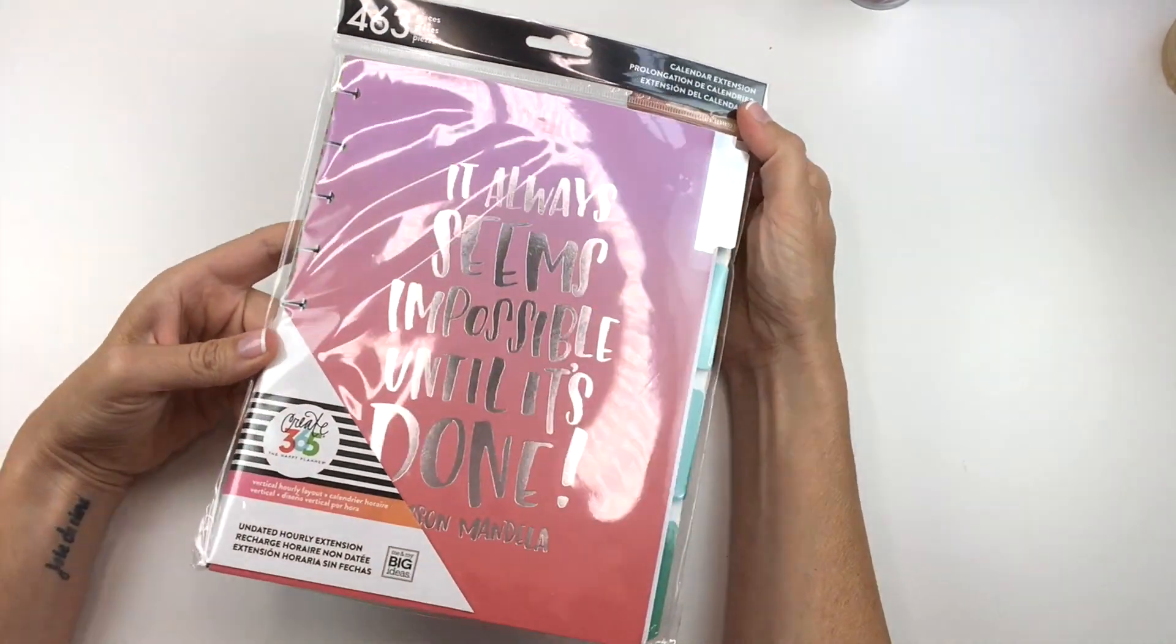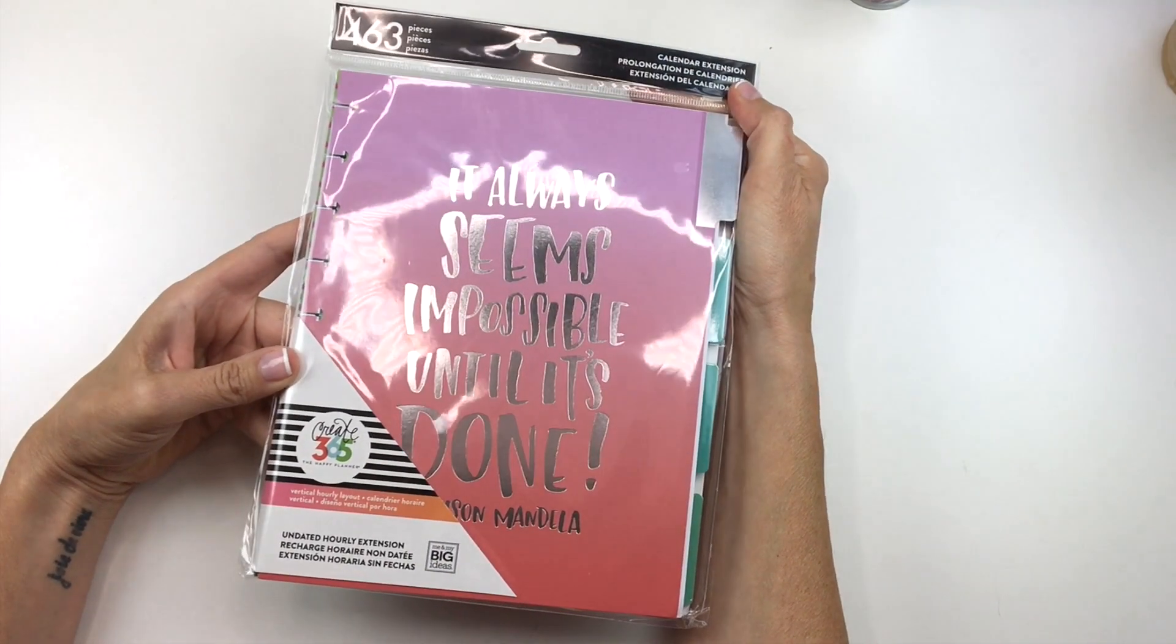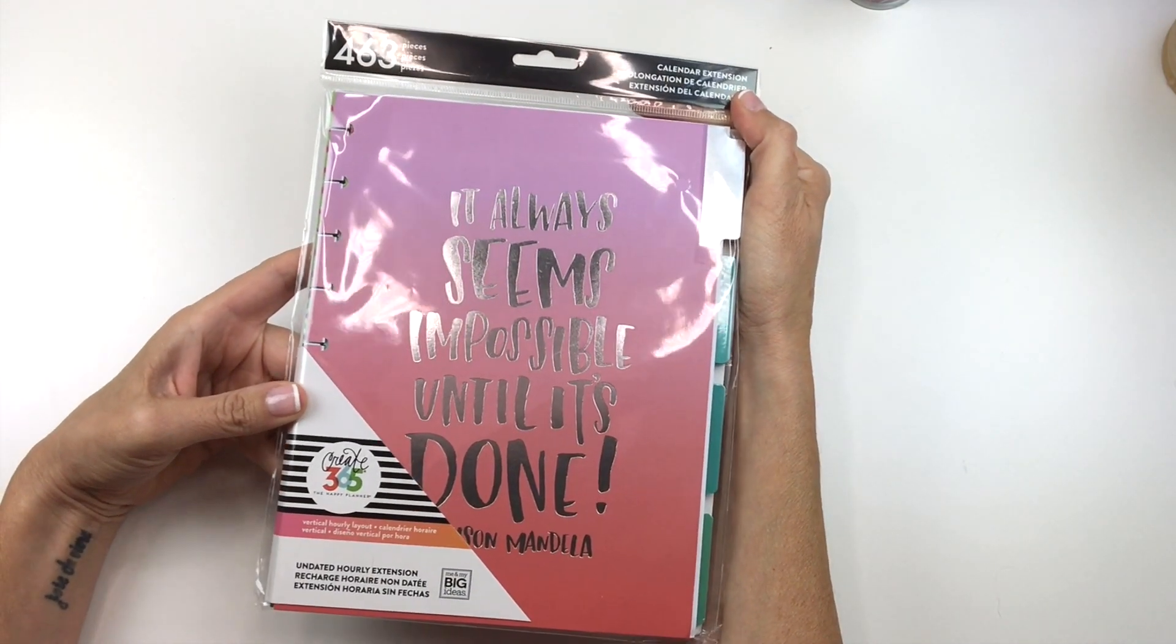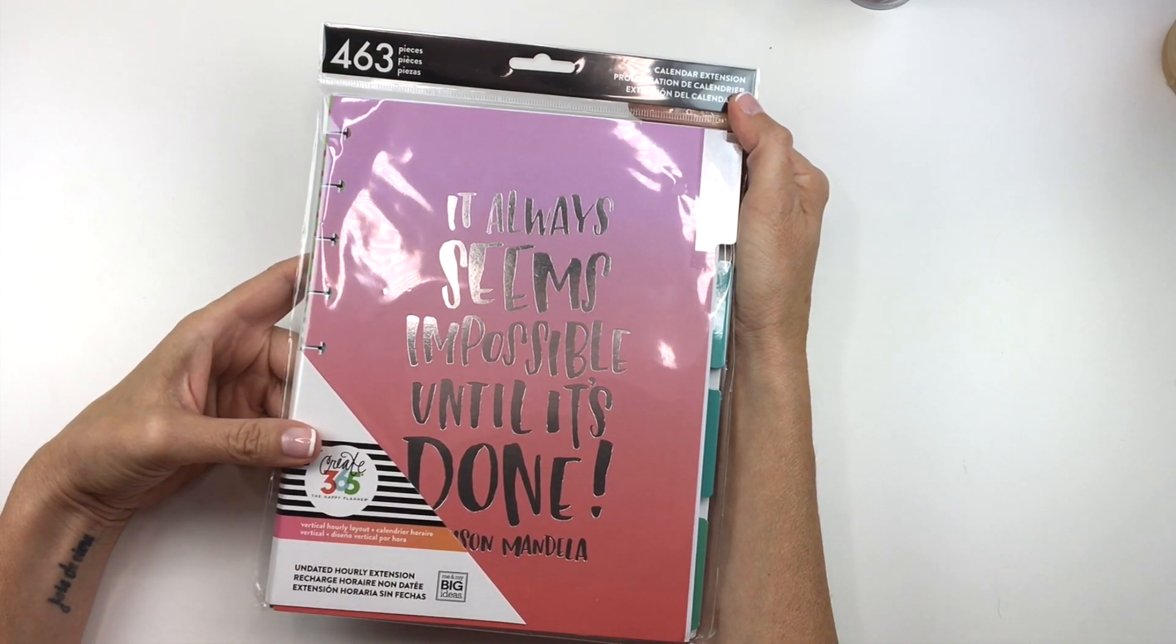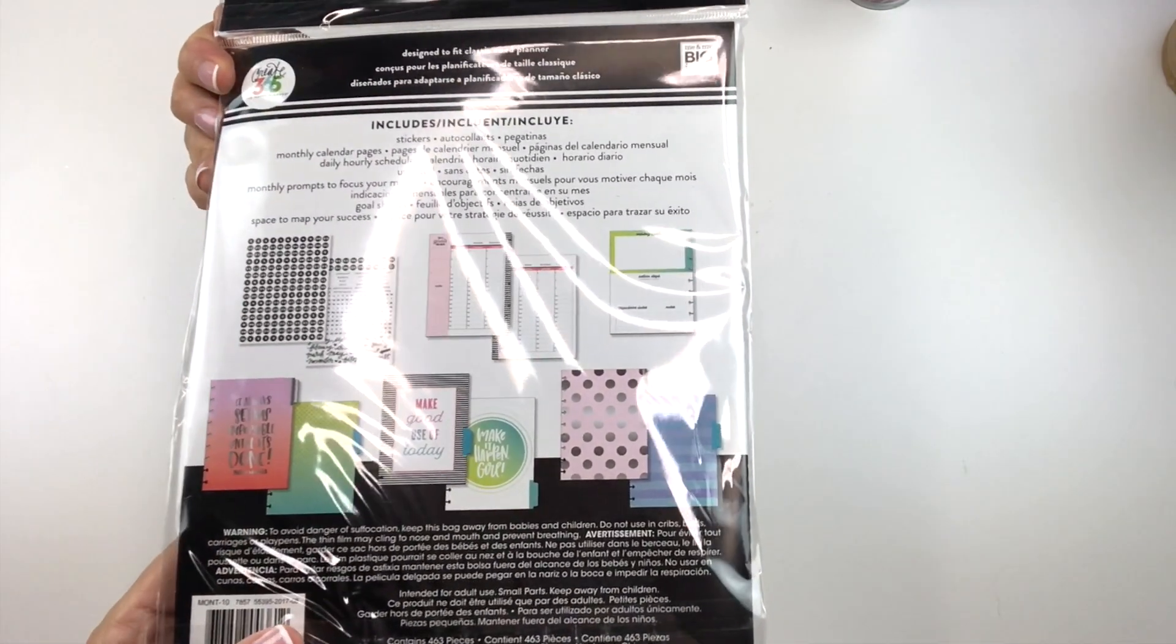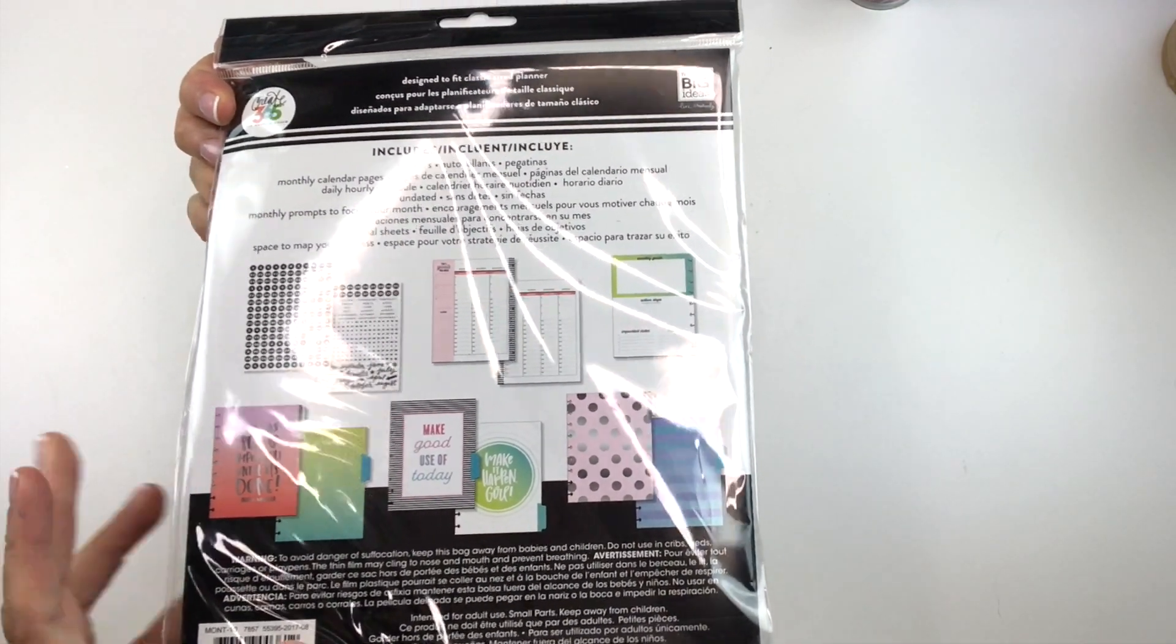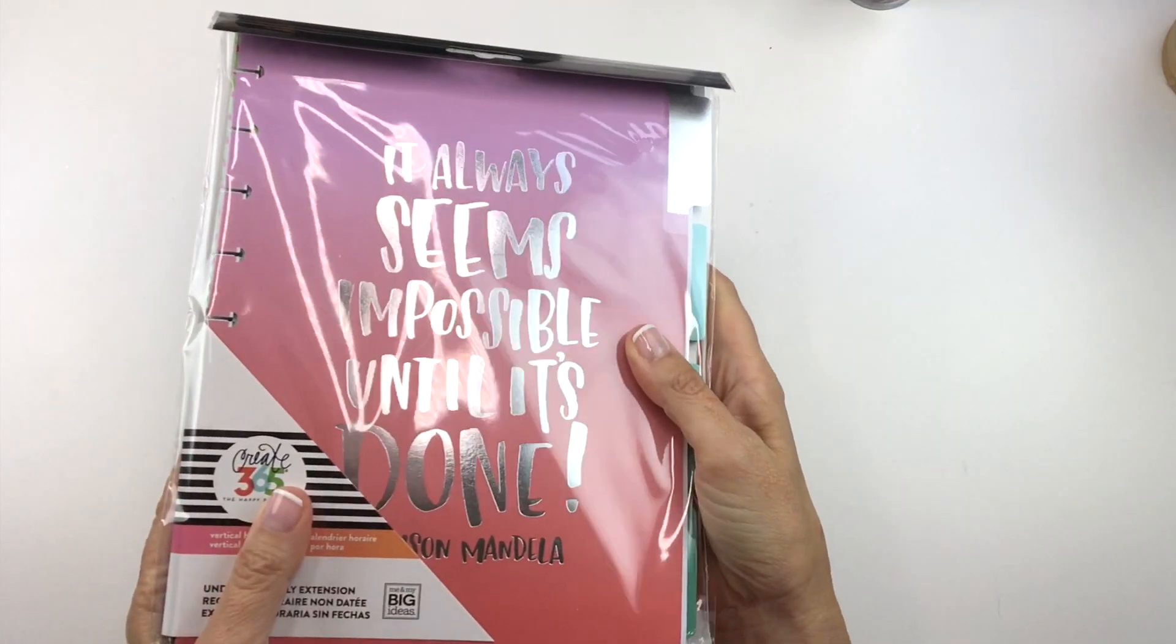Now this is the classic undated hourly extension pack. This is a vertical hourly layout. I'm giving this away because I know that I'm never going to use the hourly layout. Like it's just not something I'm ever going to use. But it does come with a bunch of stuff as you can see here and somebody might want to use this. So I figure I give it away.